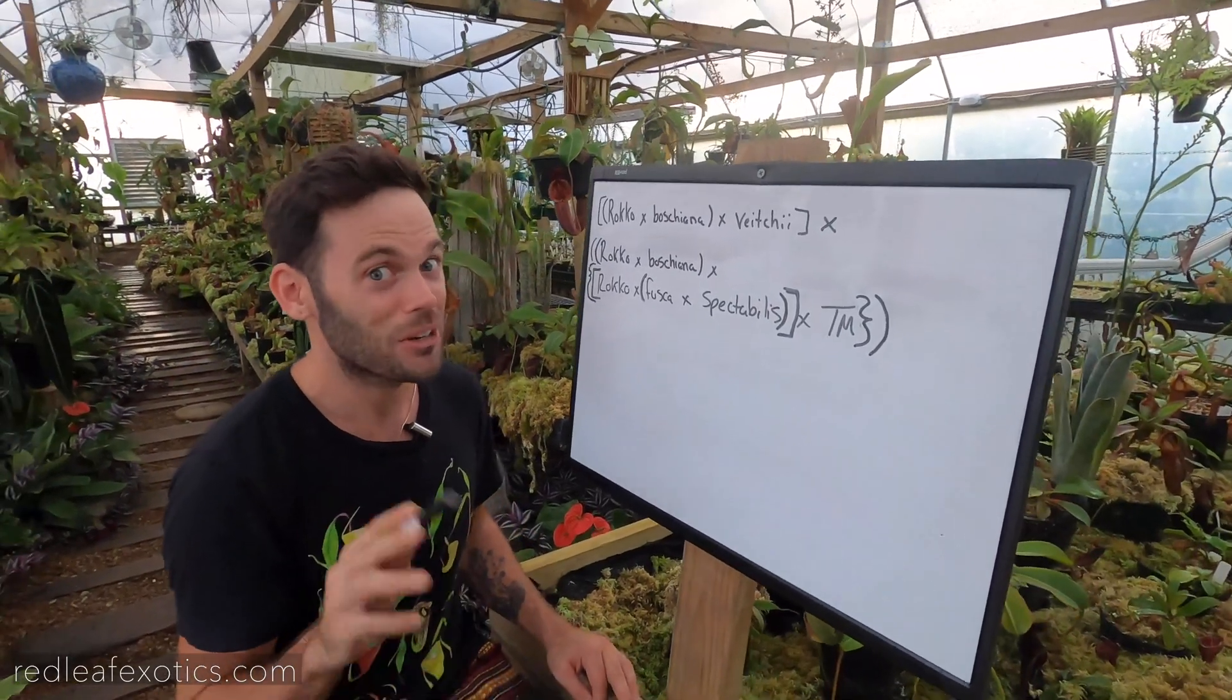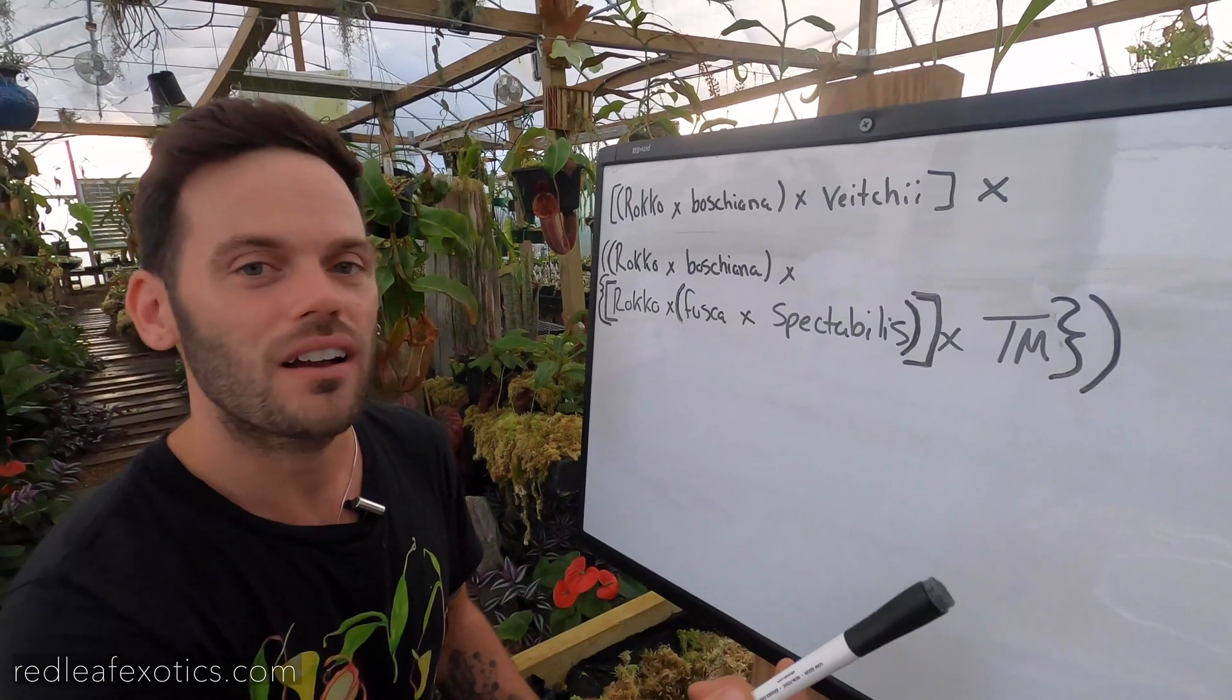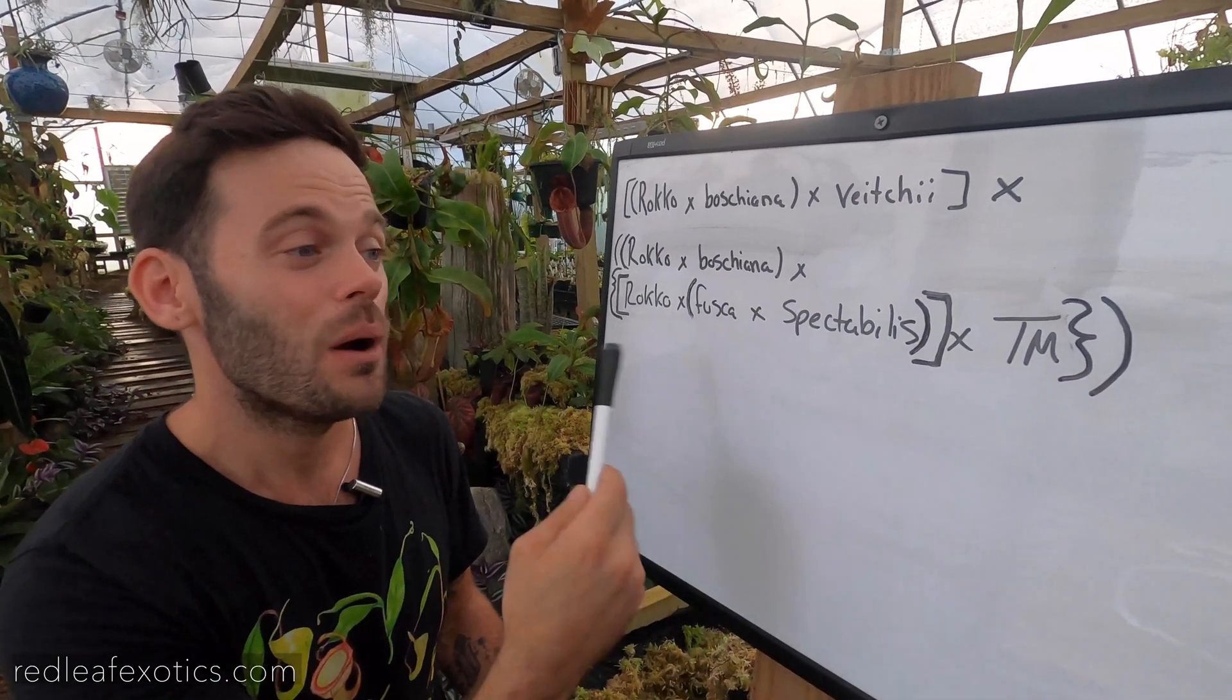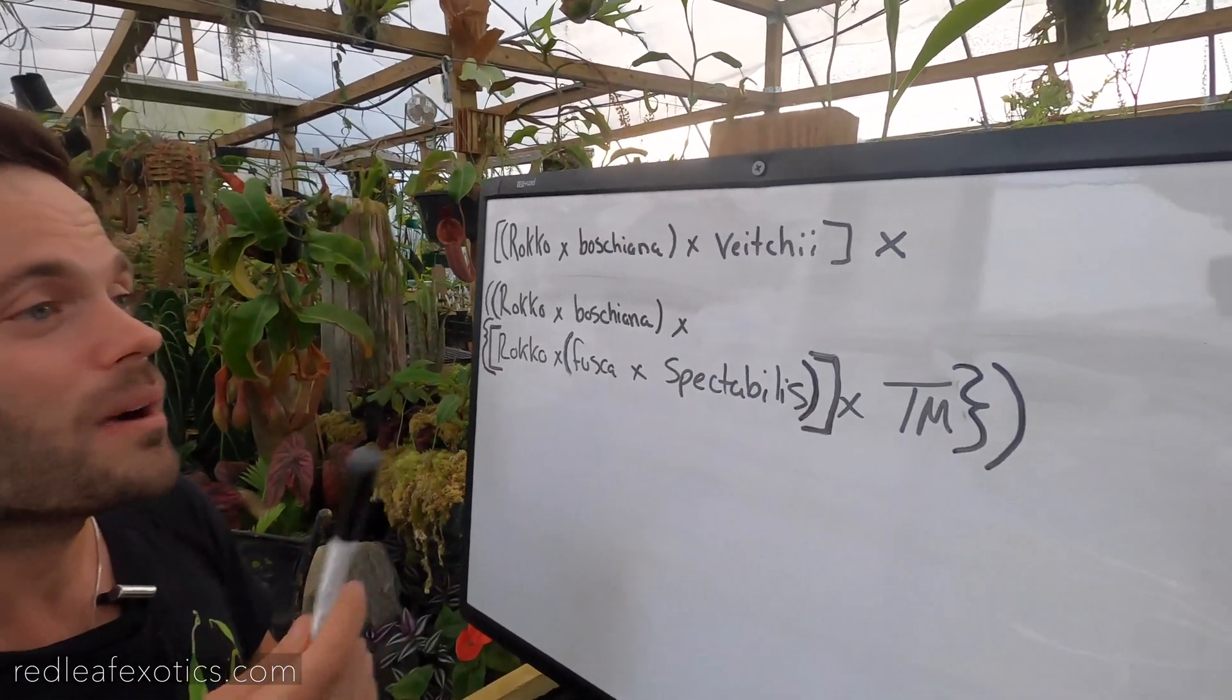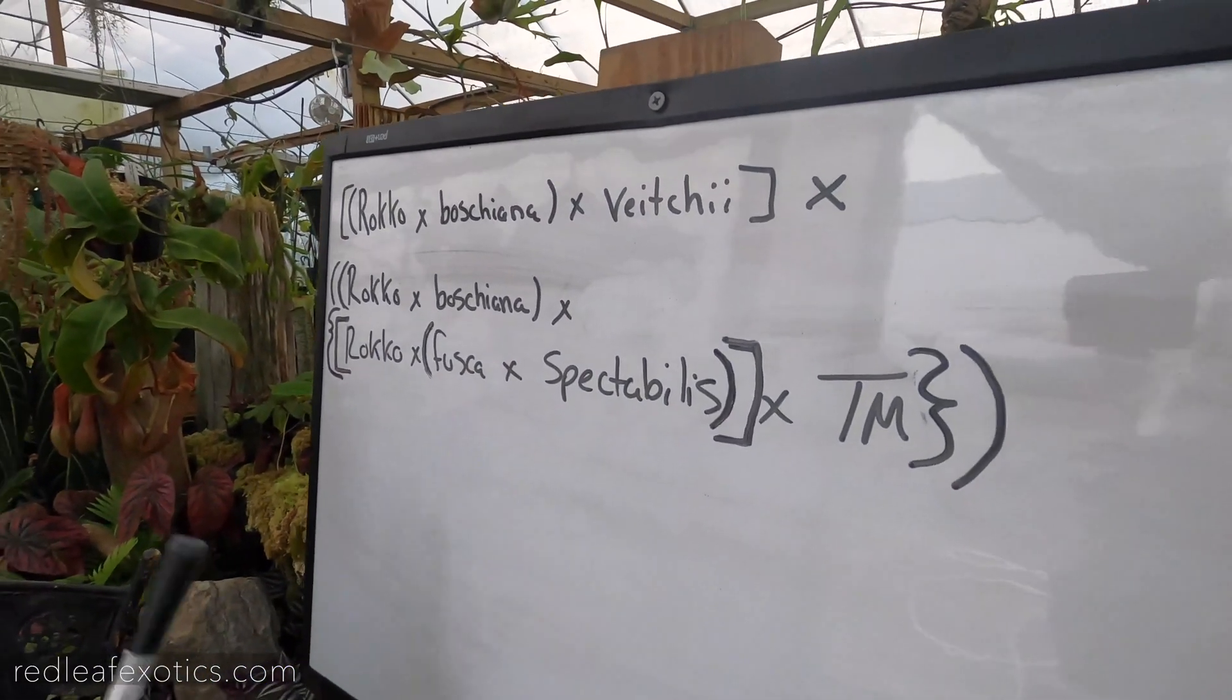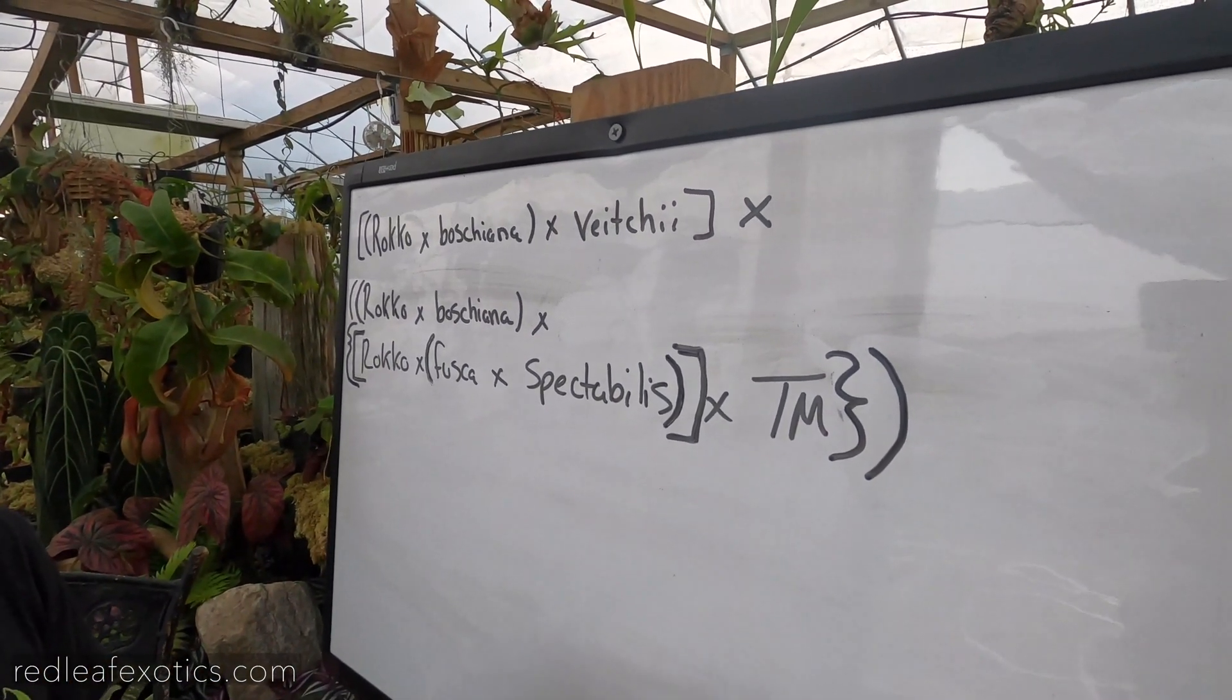I'm going to try to explain just for fun how you would write a complex Nepenthes name out and what the order of operations is. So to explain this hybrid, it's Roco-Bashiana-Vitii, Roco-Bashiana, Roco-Fusca-Spectabilis-Trasmadiensis. It's the world's longest hybrid so far, created by EP.